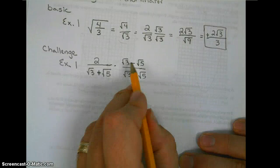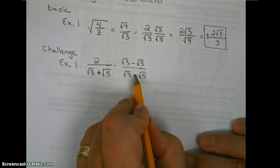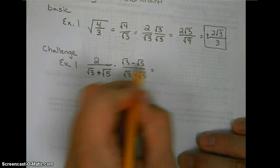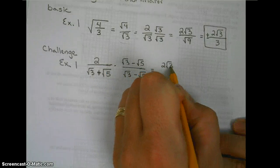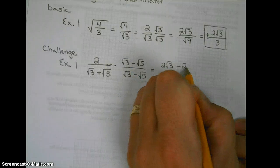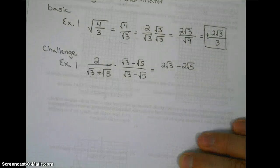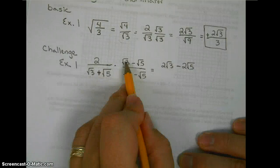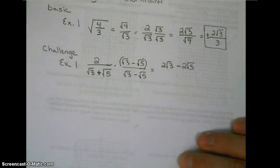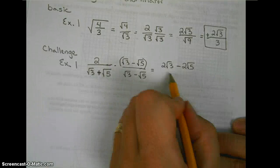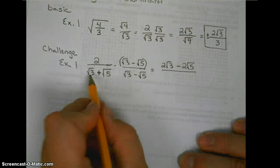Multiplying 2 times the square root of 3 minus 2 times the square root of 5, distributing the 2 on both because this is a group. Then multiplying our denominators together, we have a binomial times a binomial, so we'll use the FOIL method.